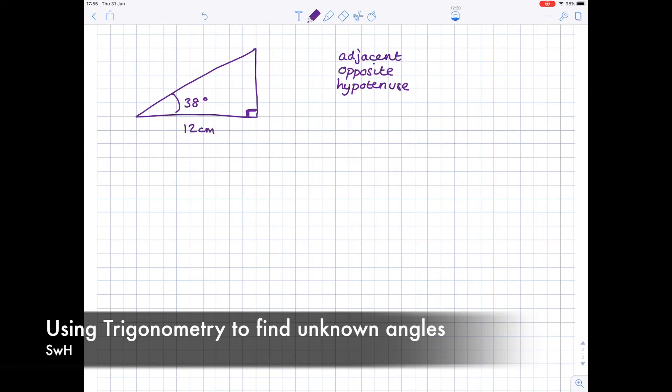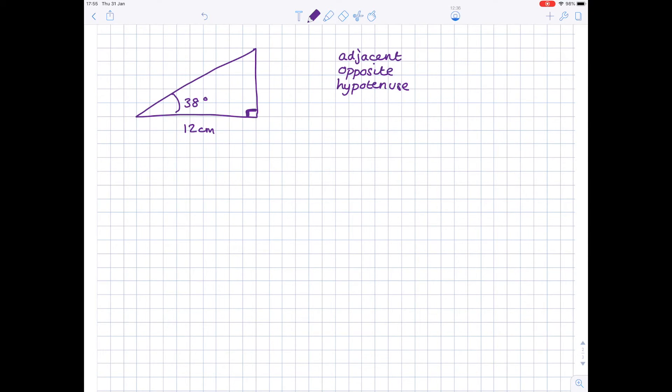In today's maths video we're going to be looking at trigonometry and using it to find unknown angles. Remember with trig we're talking about right angle triangles and you've got to be able to label the sides using these three words.